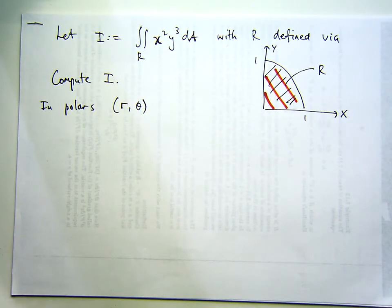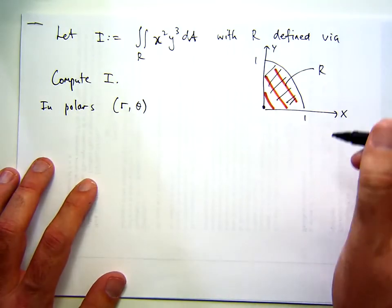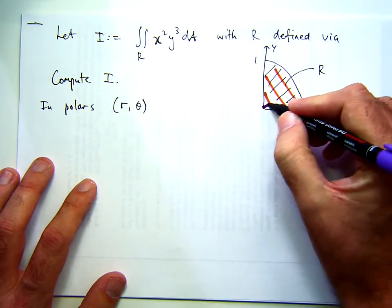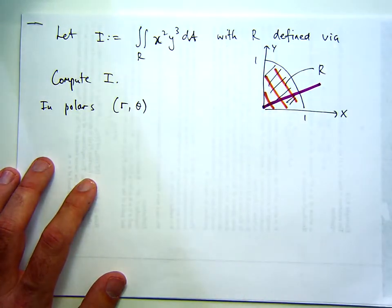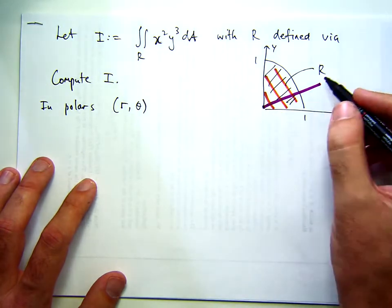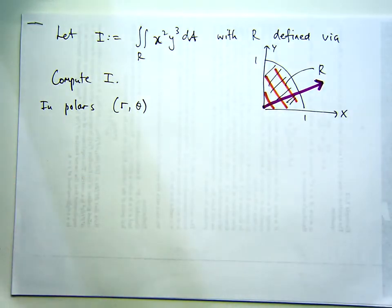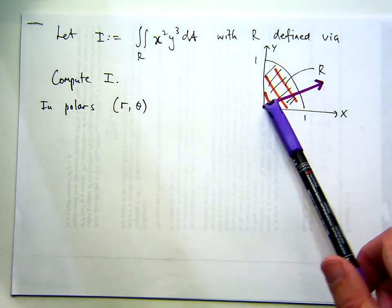Now one good way that I've found to use polars is that you start at the origin and you look at your region and you draw a line or a ray coming out of the origin that passes through your region. You look at that ray and you go, okay, where does the ray enter the region and where does the ray exit the region? If we start at the origin, we're kind of already on the edge of the region, right?